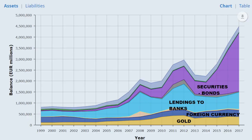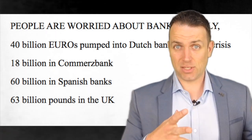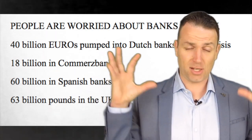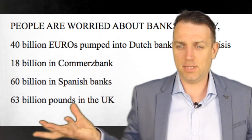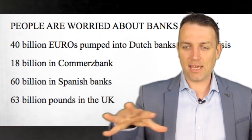Why did the euro decline so much in value? Because of the European Central Bank balance sheet, which expanded about seven times in the last 15 years and is still expanding. 14 billion euros was pumped into Dutch banks after the crisis, 18 billion into Commerzbank in Germany, nationalizing ABN AMRO and SNS in the Netherlands, 60 billion into Spanish banks, 63 billion pounds in the UK. That happened just eight or nine years ago. What is different now? Nothing — there is just more money printed out of thin air to save and keep the situation as is.